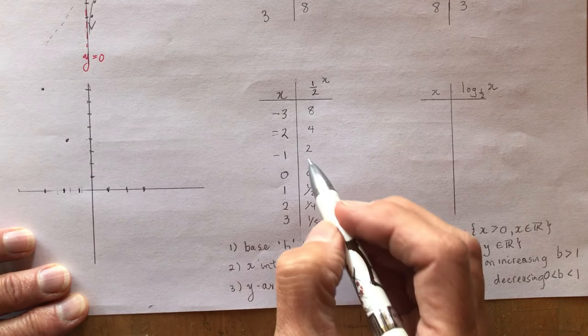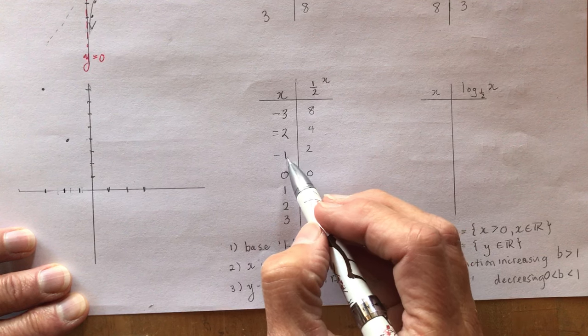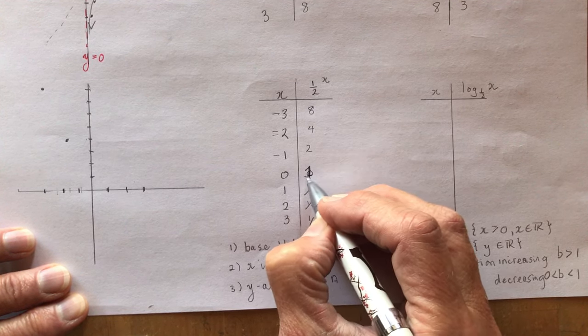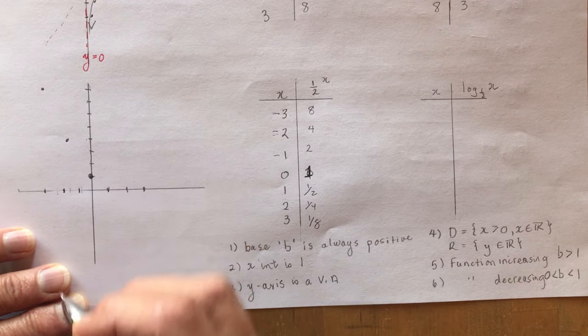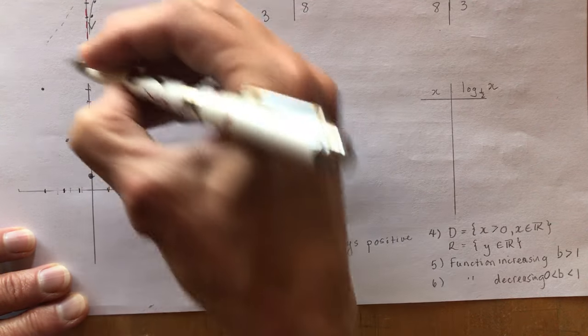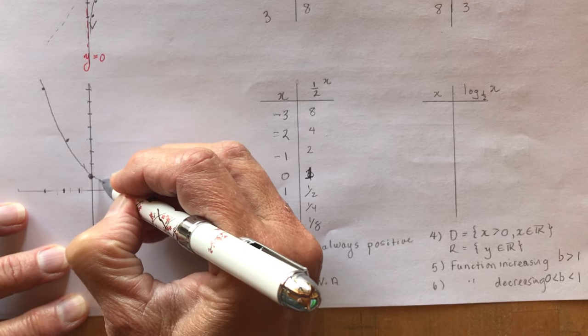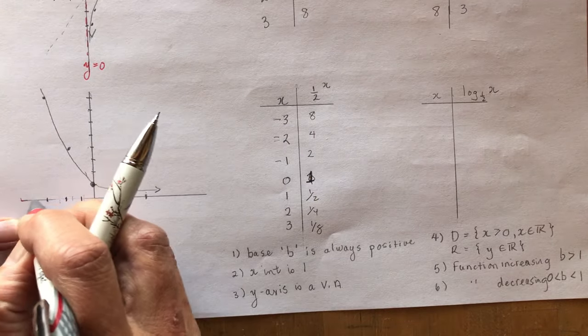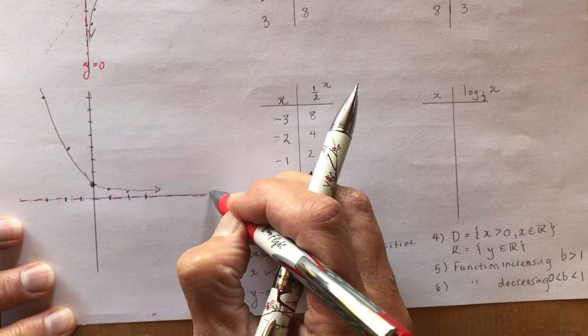Looks like I put in some crazy numbers here. This should be 1 here. Anything to the power of 0 is 1. So I have 0 and 1, then 1 and 1/2, 2 and 1/4, 3 and 1/8. So this function is coming down like this and again it has a horizontal asymptote, so the horizontal asymptote for the exponential function is y equals 0.